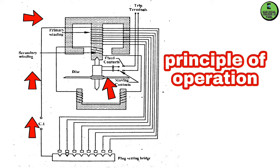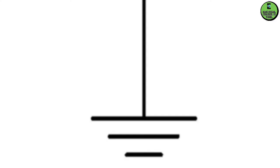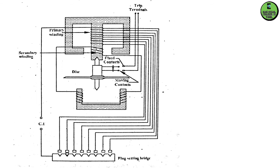Once the trip circuit closes, the faulty section is isolated by the relay. This relay is used on the power generation side for short circuit faults and earth faults. The relay isolates the faulty section while keeping the rest of the power system healthy. This relay also functions as an earth leakage relay. Thank you, and I will show more in the next video.